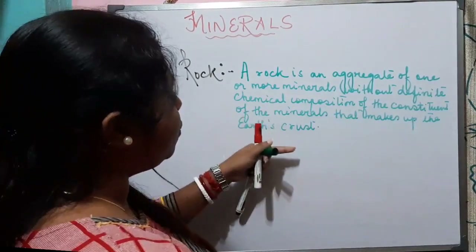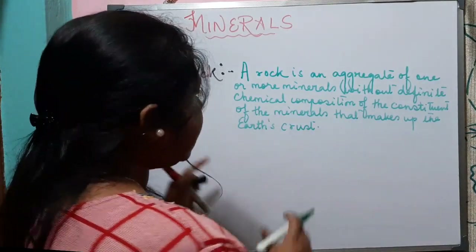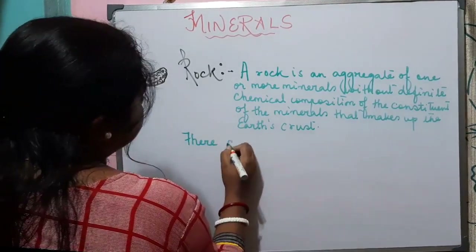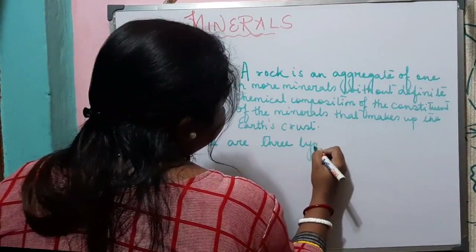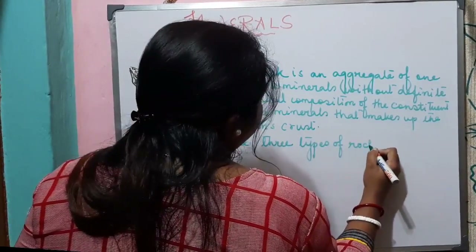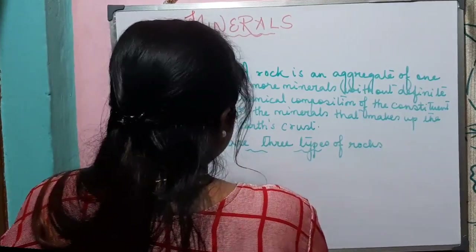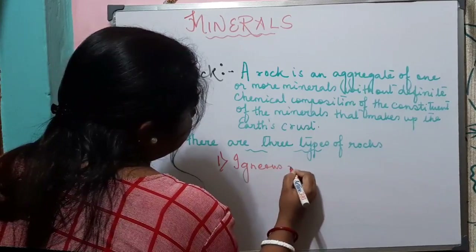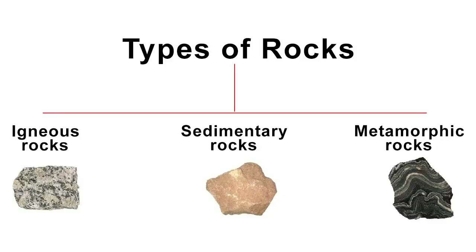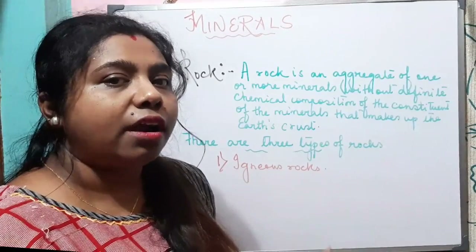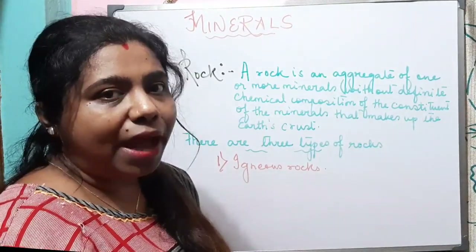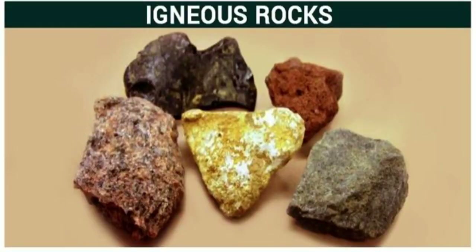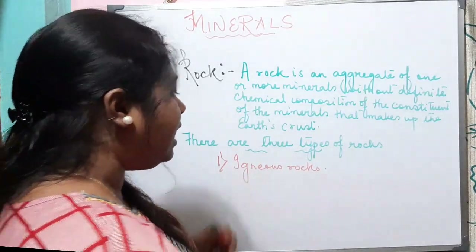There are three types of rocks. Number one is igneous rocks. These are formed by magma that comes out during volcanic eruption. They form either in the interior of the earth as intrusive igneous rocks, or when magma cools at the surface of the earth as extrusive igneous rocks.